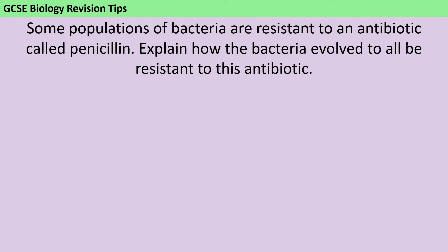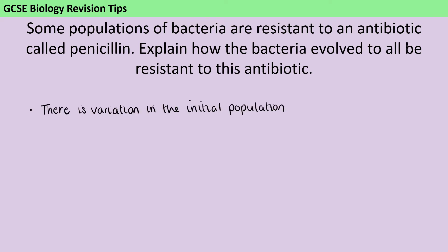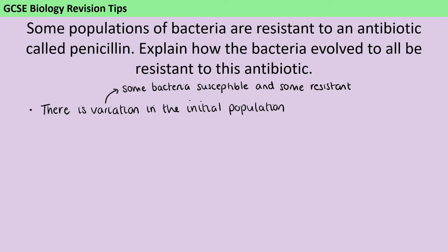We always start from the point of view that we're not going to see this kind of evolution if every individual in the population is identical to each other. There must be some variation to begin with. We can then specify that in this instance, we're talking about variation in their response to the antibiotic. In order for that variation to be passed on and for evolution to happen, it must be genetic variation.